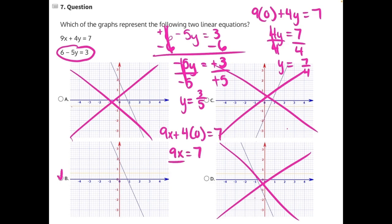9 is being multiplied to x, so we need to divide both sides by 9, giving us x equals 7 ninths. Again, our x-intercept must be positive, not negative, like it was in answer choice D.